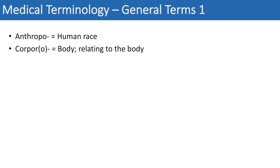The next set of medical terms are general terms. The first one is anthropo, which simply means the human race — you can think of anthropology. The next one is corpore or corporeo, which means body or relating to the body, so we can think of corporeal. Another prefix and suffix that refers to the body is somato and soma — you can think of somatic, or the body of a neuron, referred to as a soma.